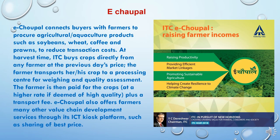Next is eChoupal. eChoupal connects buyers and farmers to procure agricultural and aquaculture products such as soybeans, wheat, coffee, and prawns to reduce transaction costs. This is an initiative of ITC. At harvest time, ITC buys crops directly from any farmer at the previous day's price. The farmer transports his crop to a processing center for weighing and quality assessment. The farmer is then paid at a higher rate if deemed of high quality, plus a transport fee. eChoupal also offers farmers many other value chain development services through its ICT platform such as sharing of best prices. ITC eChoupal is raising farmers' income, helping to raise productivity, providing efficient market linkage, promoting sustainable agriculture, and helping create resilience to climate change.